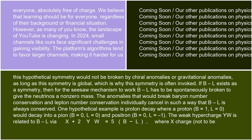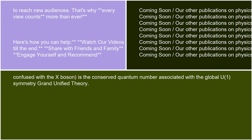The weak hypercharge YW is related to B-L via X + 2YW = 5(B-L), where X charge is the conserved quantum number associated with the global U1 symmetry in grand unified theory.